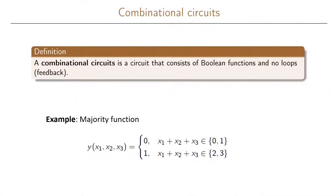We're going to look at the difference between combinational circuits and sequential circuits. These two types of circuits are very similar but also fundamentally different. In fact, sequential circuits are built using combinational circuits and an extra element. The definition of a combinational circuit is that it is a circuit that only consists of boolean functions and there are no loops.